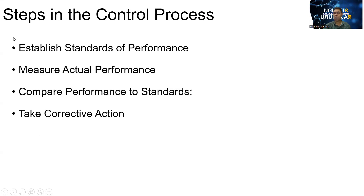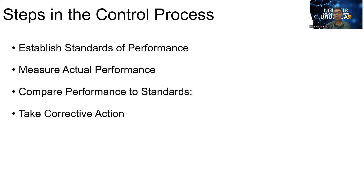Now there are steps in the control process. When we conduct controlling activities, first we have to establish the standard of performance — maybe objectives or the ideal situation. Then measure actual performance. We have some standard, and then we have to measure the actual. After that, we have to compare the standard and the actual — that is called comparing performance to the standard. Then if there is a gap, we have to take corrective action. That is the step in the control process.